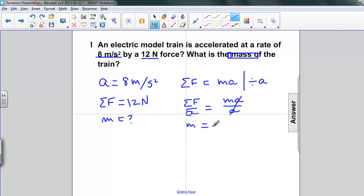We have mass equals net force divided by acceleration, and then substituting all the values. We have 12 newtons divided by 8 meters per second squared. And let's remember that the newtons is a kilogram meter per second squared.